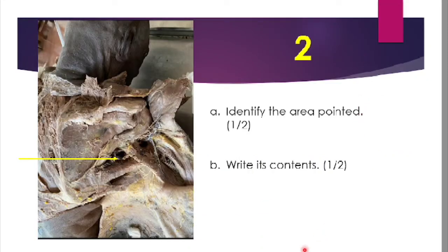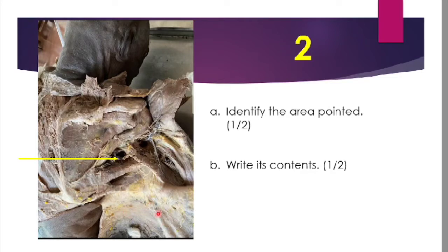The second question asks you to identify the area pointed and write its contents. You can see this is a scapula with many intermuscular spaces. The person is lying in the prone position; the scapula is visible in the back region, the arm is extended, and the skin flap of the axilla region has been reflected downwards.